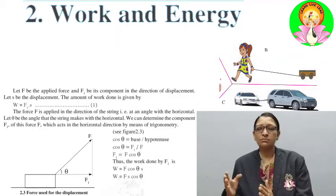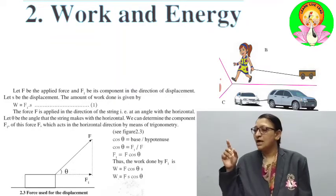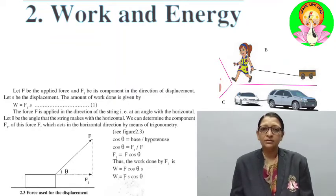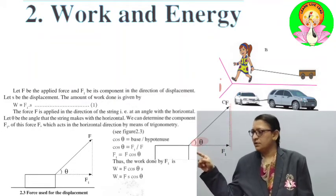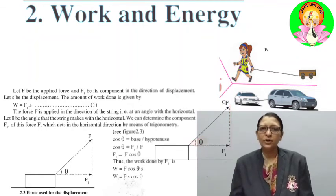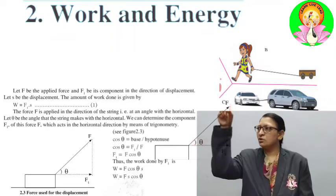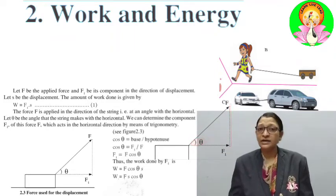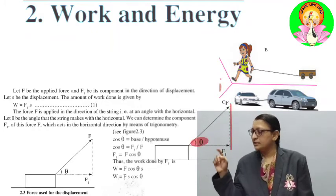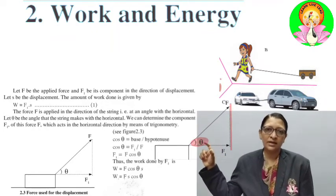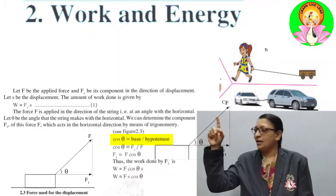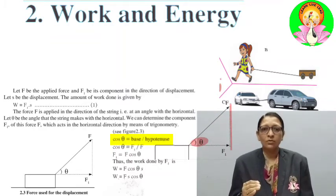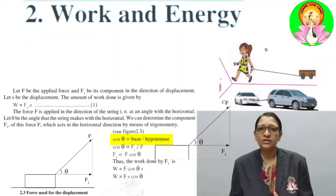The work done equals the component of the force multiplied by displacement. The component of the force is calculated using the trigonometric ratio cosine. If theta is the angle formed between the force vector and the direction of displacement, and we draw the perpendicular, a right-angle triangle is formed. Cos theta equals base upon hypotenuse, so W = F cos θ × S.